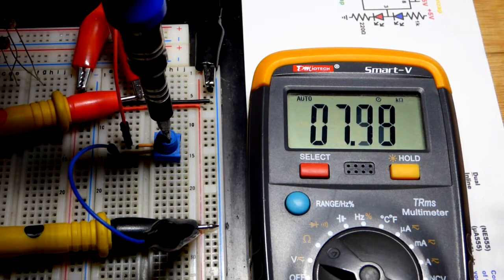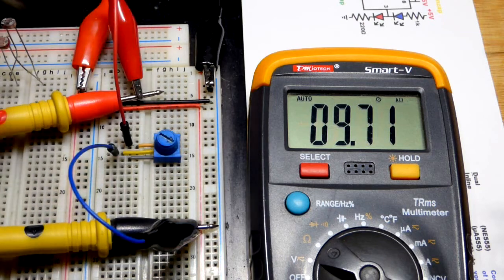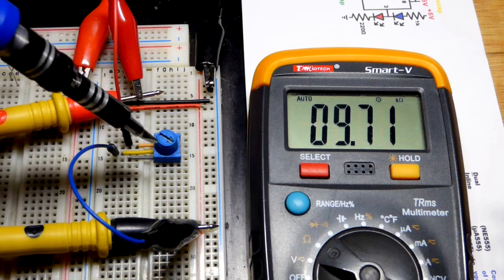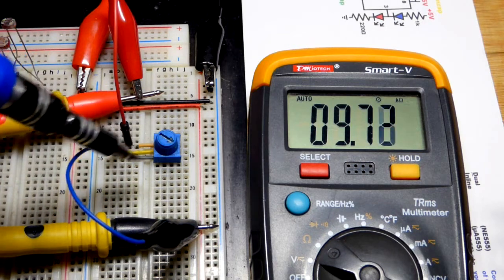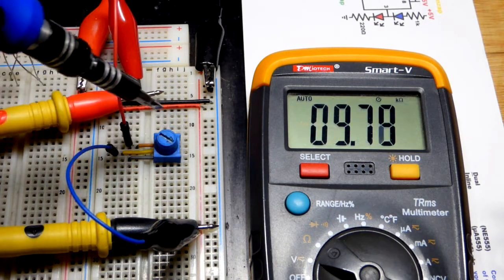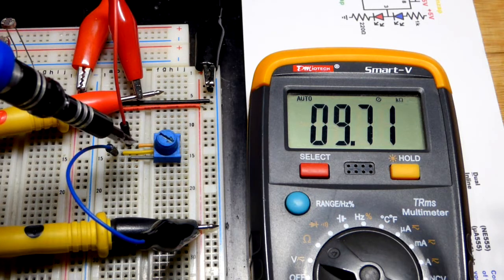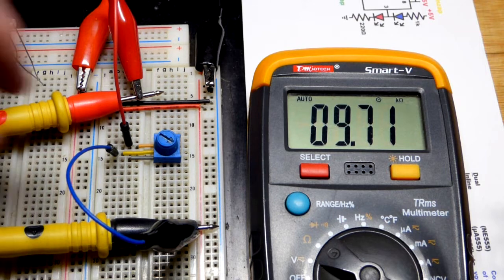And then we're going to turn the trim pot all the way the other way. And there you can see we have our full value right there. That's because now the wiper is basically connected to the other jumper that we measured before. The current has to go through all of the resistive element there to get to the wiper. That's how that works.